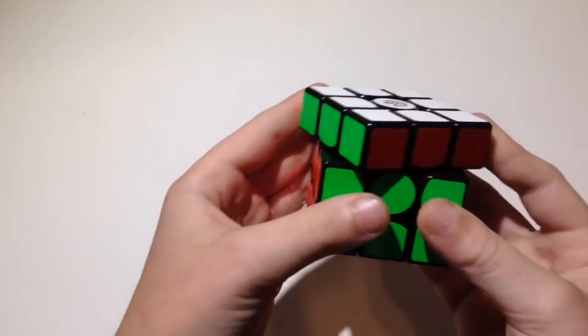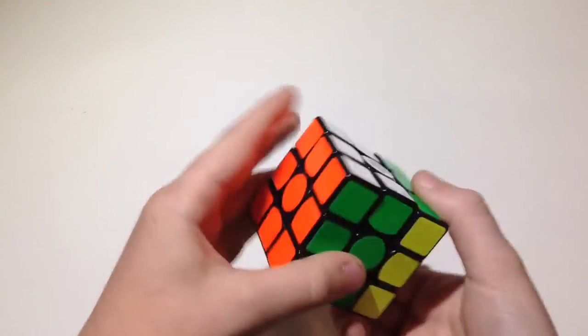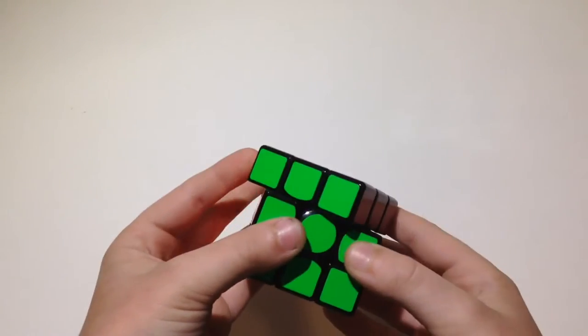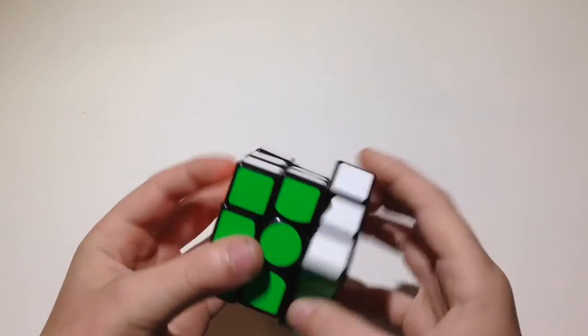The corner cutting on this cube is past 45 degrees for a regular cut, which is definitely the best corner cutting on the market, and is either better or equivalent to the Valk. It cuts almost a full piece reverse.